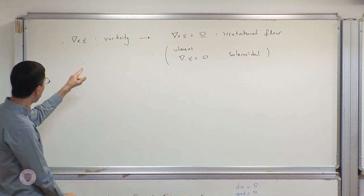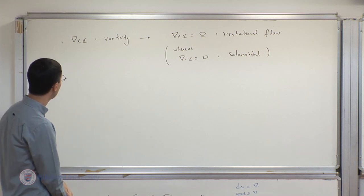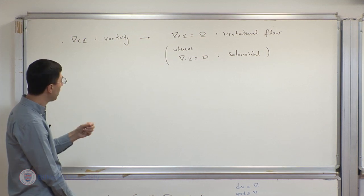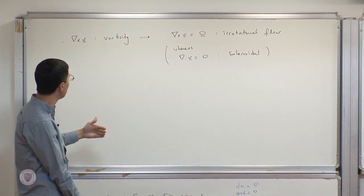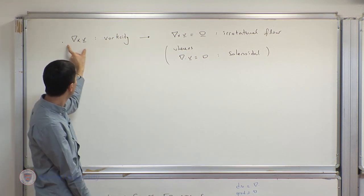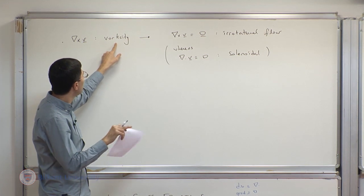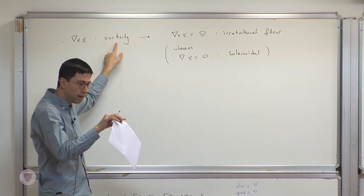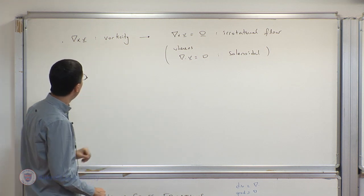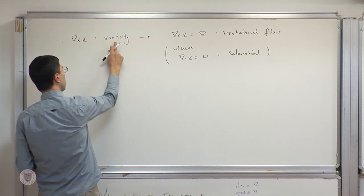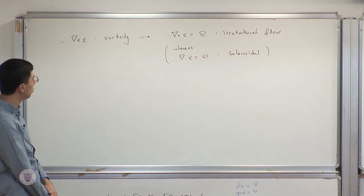Vorticity has to do with the rate of rotation — something very close to the angular velocity vector, or precisely twice the angular velocity vector for a rigid body. In general it is still interpreted as something that has to do with rotation. This vector governs the structure of rotational flows in fluid dynamics, and we're going to encounter this concept once again when I briefly talk about turbulence.